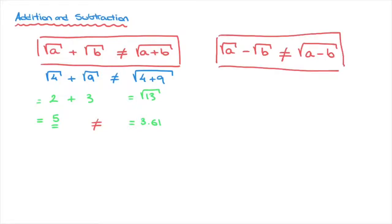Here's an example. Let's say we have the square root of twenty-five minus the square root of sixteen. The square root of twenty-five equals five, and the square root of sixteen equals four. So the square root of twenty-five minus the square root of sixteen is equal to one.